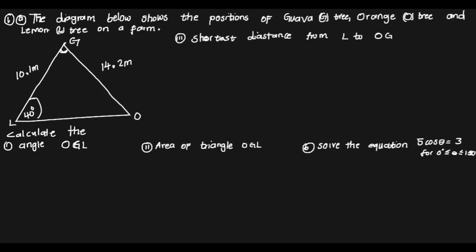In this video we are going to revise the channel of mathematics paper 2 for external from the year 2020. The question shows the position of a guava tree, orange tree, and lemon tree on a farm. We have been given a non-right angle triangle, and whenever you see a non-right angle triangle, we are going to use either the cosine rule or the sine rule — unlike a right angle triangle where we would use the trig ratios.